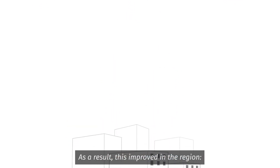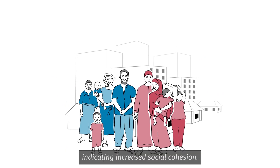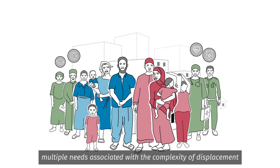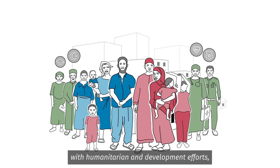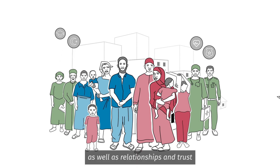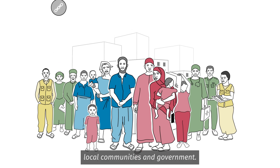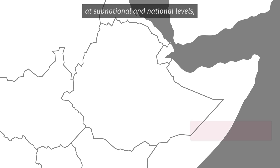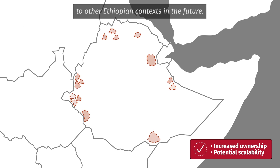As a result, this improved interactions between host and displaced communities in the region, indicating increased social cohesion, the capacity to address multiple needs associated with the complexity of displacement through linking community and government engagement with humanitarian and development efforts, as well as relationships and trust between humanitarian and development actors, local communities, and government. As this approach was integrated into legal and institutional frameworks at subnational and national levels, there is increased ownership and potential scalability to other Ethiopian contexts in the future.